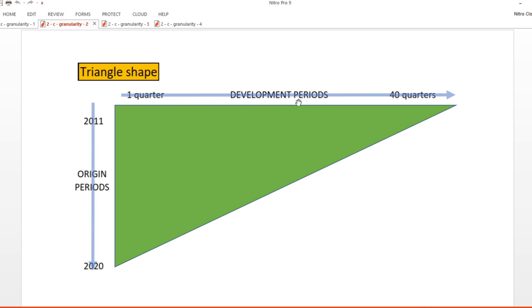Lastly, development period length is similarly driven by the balance we discussed earlier. Monthly can sometimes give you too much data, whereas annual development just blurs the insight you need. However, some policies may have such a long period between insured events occurring and claims settling that annual development is more appropriate.